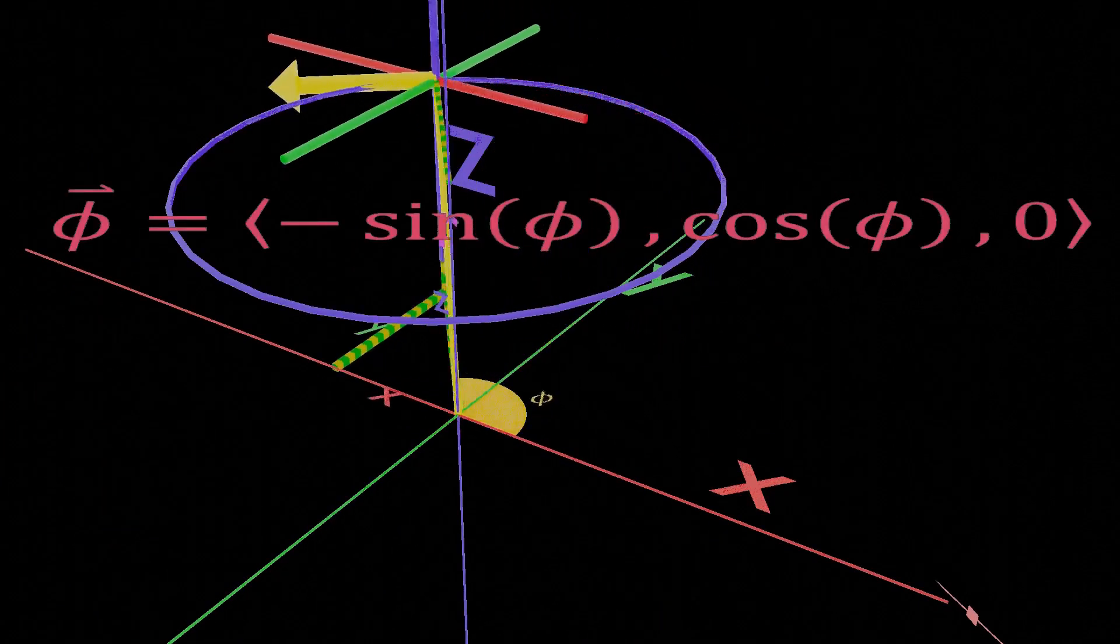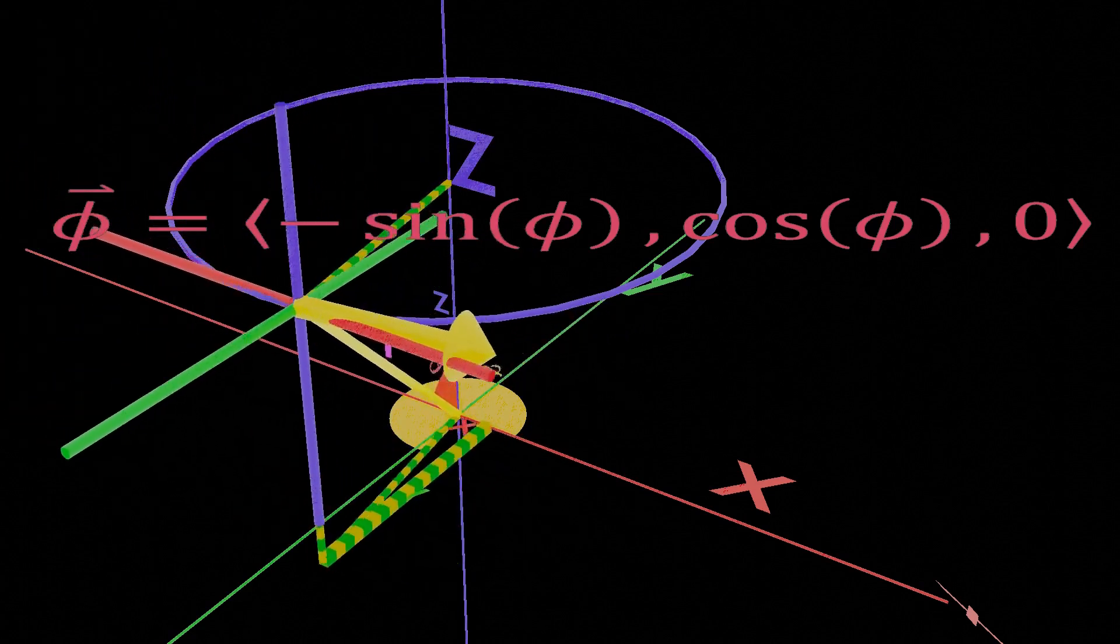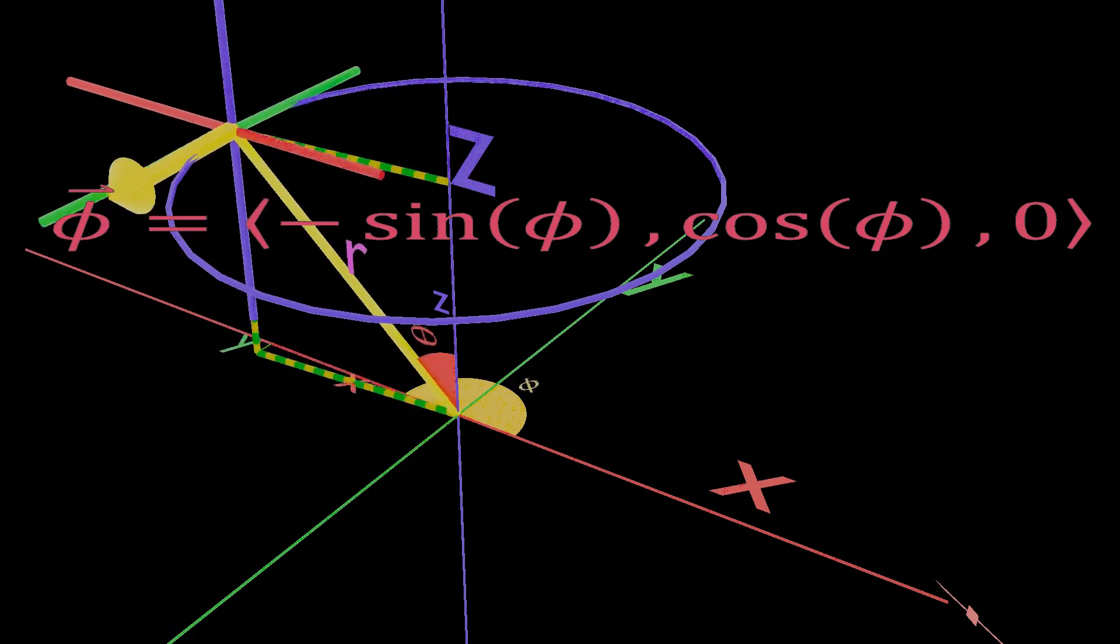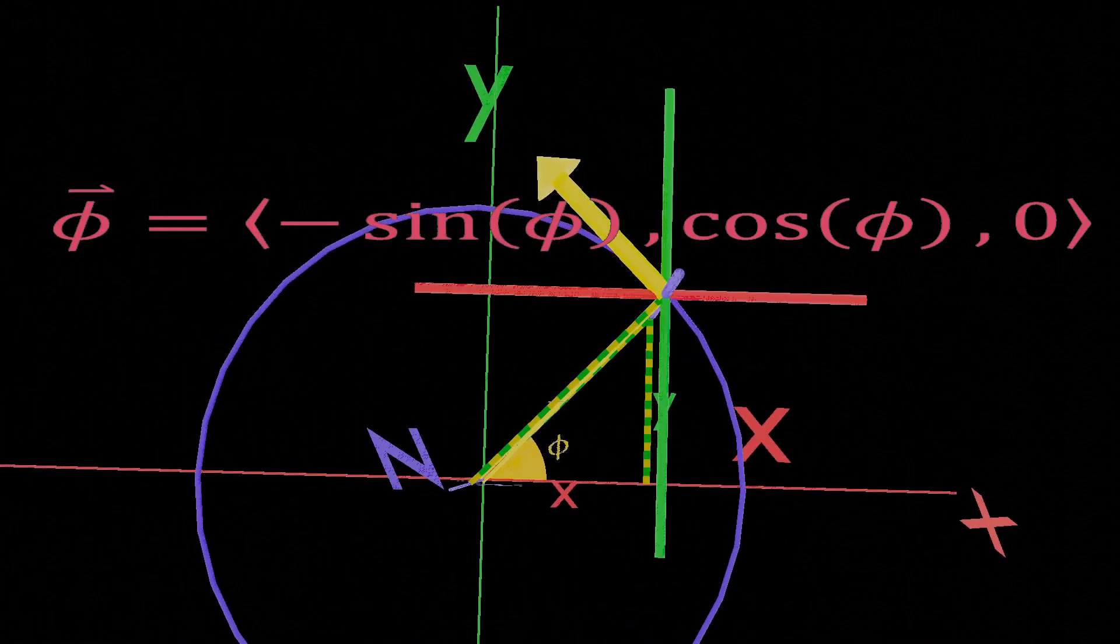If you increase phi, you will get a circle of radius r sine theta. So again, draw a tangent in the direction of increasing phi, then find the unit vector of this tangent.